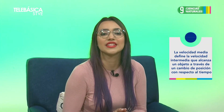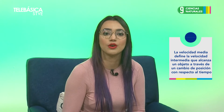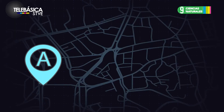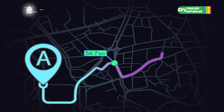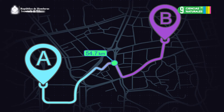La velocidad media define la velocidad intermedia que alcanza un objeto a través de un cambio de posición con respecto al tiempo. Por lo tanto, la velocidad media depende solamente de la posición inicial y de la posición final del objeto, y no depende de la trayectoria tomada por el objeto para alcanzar la posición final desde su posición inicial.